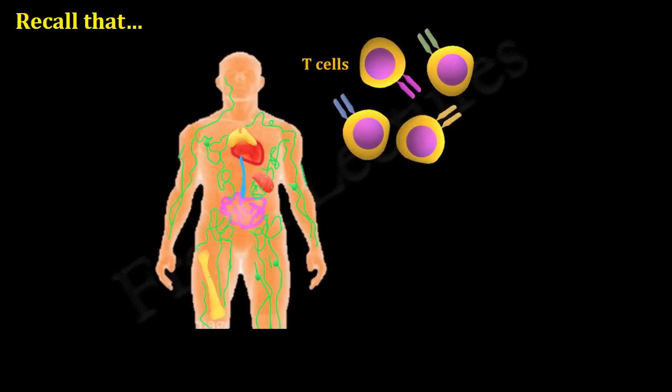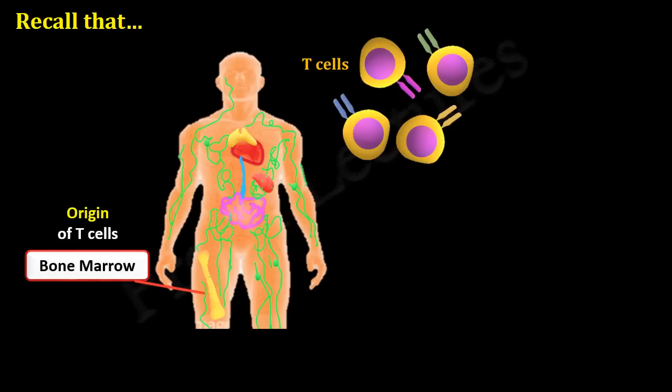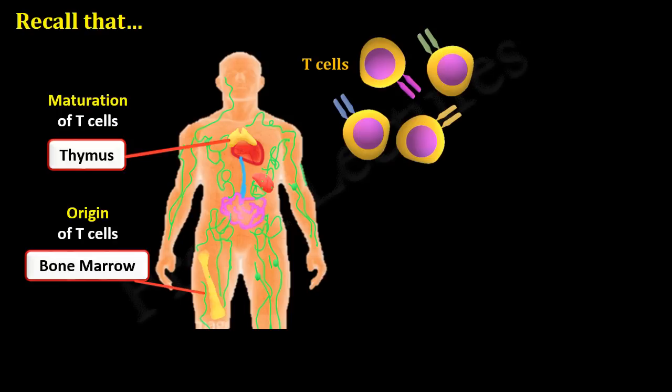T-lymphocytes originate in the bone marrow, but later they migrate to the thymus for their further development. It is in the thymus that these T-lymphocytes rearrange their T-cell receptor genes. So one of the main functions of the thymus is to produce T-cell receptors.